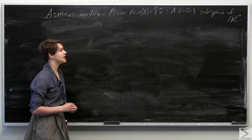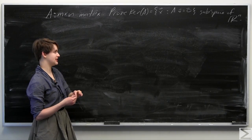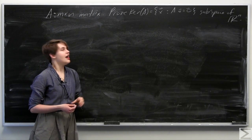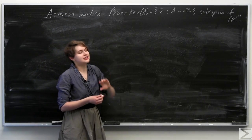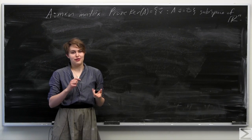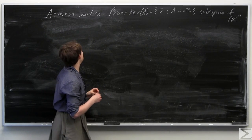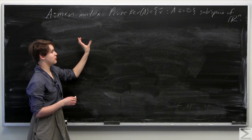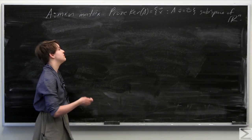In order to be a subspace of something — in this case a subspace of Rn — an object must satisfy three requirements. I will go about this by proving the requirements one at a time.